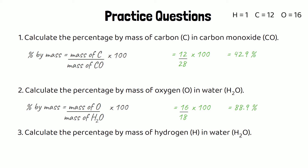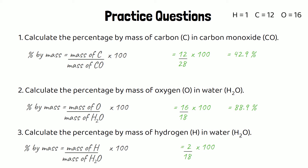For the final one, we want the relative atomic mass of hydrogen, but we need to times it by 2 because it's H₂O. Then we divide by the relative formula mass of water and times by 100. That's 2 over 18 times 100, which gives us a percentage by mass of 11.1%.